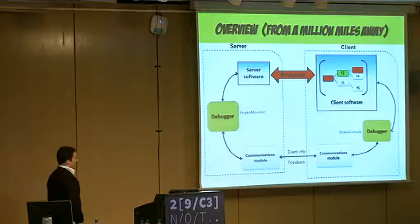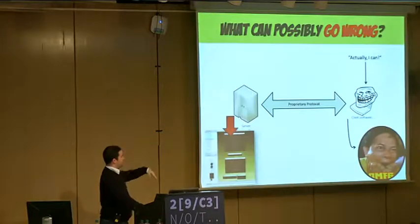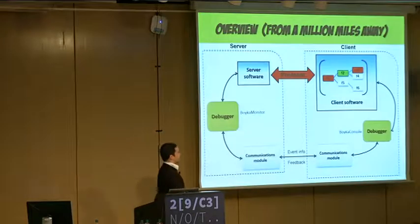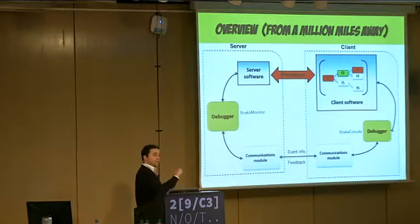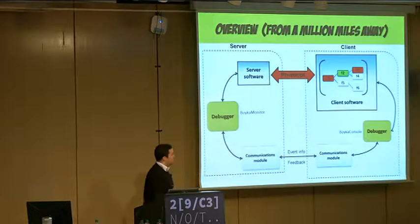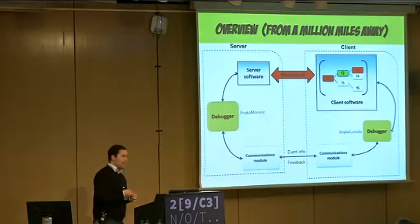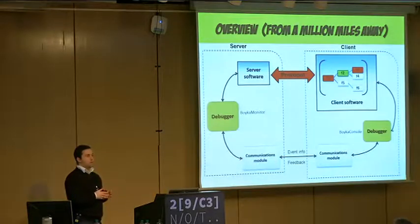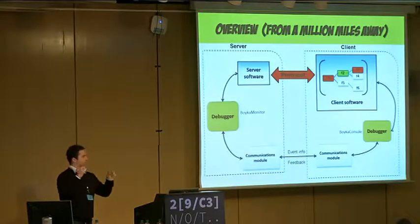This is really easy. I have two machines. Here's the server — it's just going to get the packets, process them, and hopefully crash. And there's the client software. I wrote two small pieces of software: Boyka Monitor and Boyka Console. They're basically two Win32 debuggers. I took the API and asked, how do you write a Windows debugger? It's actually pretty easy.